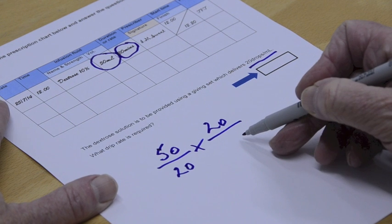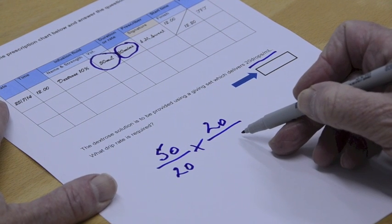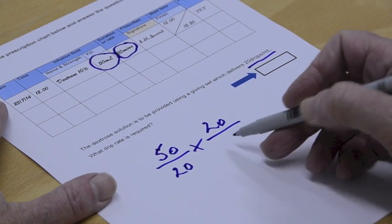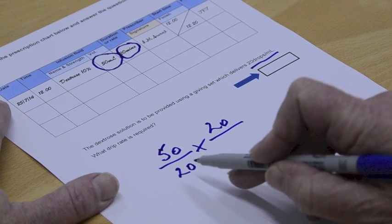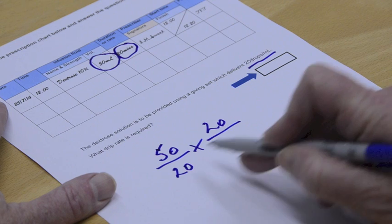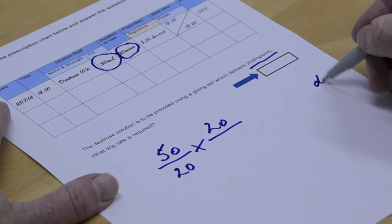What are you going to do now? Stop before you say 60. If you remember, the reason we had a 60 down here before was that we could convert the hours to minutes, because our answer was in